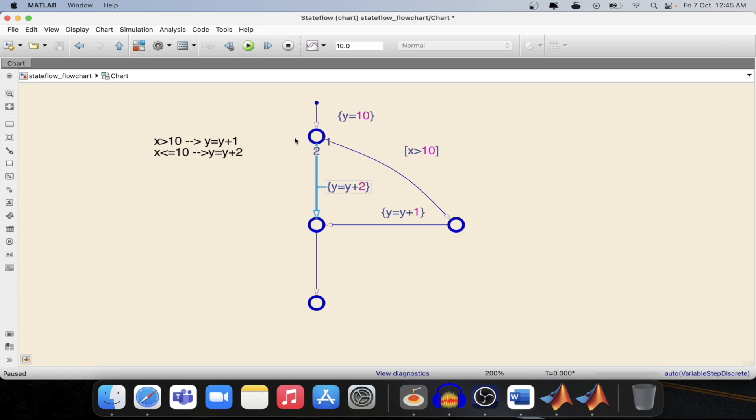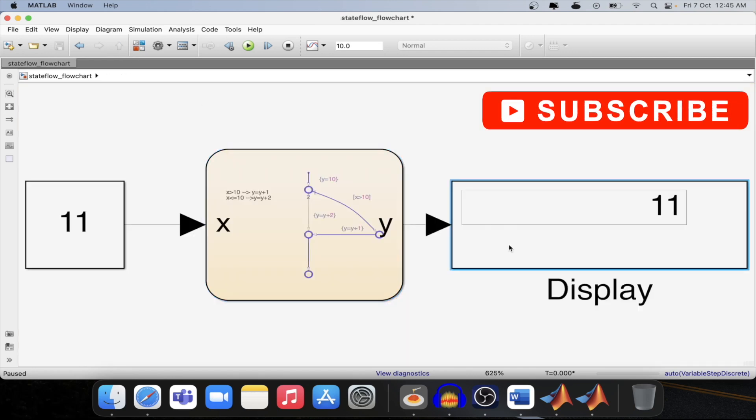In this case we have given x is 11 which is satisfying the first condition. So that's why it has taken this path and reached and added y with 1 and given the output as 11 as you can see here in the display.